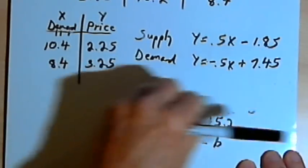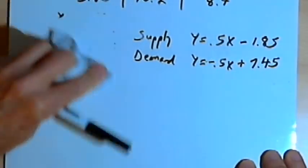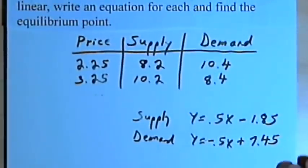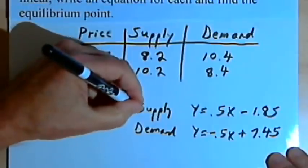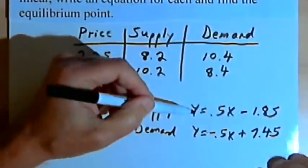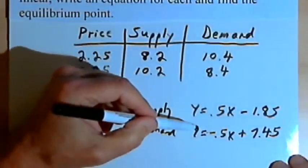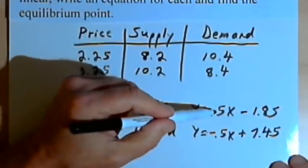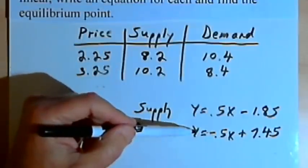That's the first part of the question — finding the price-supply and price-demand functions. Now we have to find the equilibrium point, which is the place where these two equations have the same values. Instead of using a graphing calculator to find where the lines intersect, I'm going to use an algebraic approach and solve this as a system of equations.